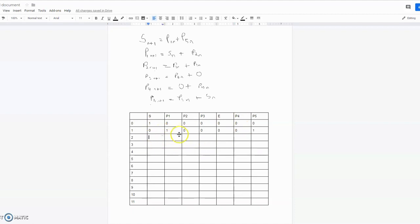For the second row, we continue again. S(2) = P1(1) + P5(1) = 2. Then P1(2) = 0, P2(2) = 1, P3(2) = 0, E(2) = 0, P4(2) = 1, and P5(2) = 0.